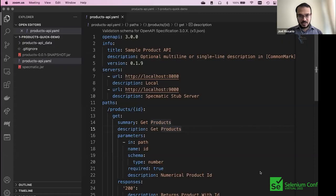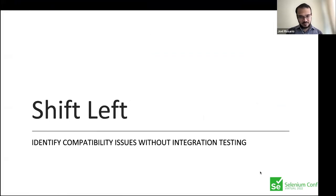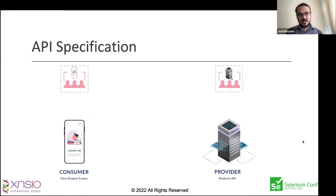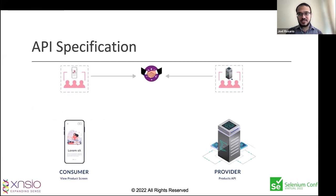The problem statement is: can we identify compatibility issues without integration testing? Taking off from where Hari left off — we are trying to shift left and identify compatibility issues without integration testing. These compatibility issues often come up because of misunderstandings between the consumer and the provider. The reason is usually that they come to an agreement about how the API should behave, but this agreement might be over email — scattered across multiple emails, Word documents, and Excel files.